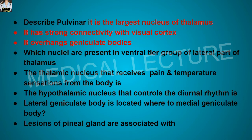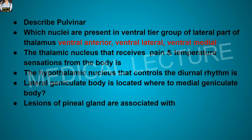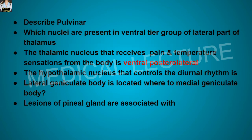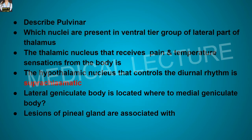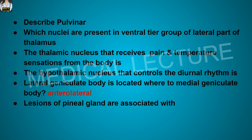The nuclei present in the ventral tier group of the lateral part of the thalamus are the ventral anterior, ventral lateral, and ventral medial nuclei. The thalamic nucleus that receives pain and temperature sensation from the body is the ventral posterolateral thalamic nucleus. The thalamic nucleus that controls the diurnal rhythm is the suprachiasmatic nucleus. The lateral geniculate body is located ventrolateral to the medial geniculate body.